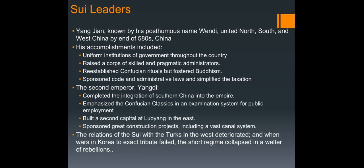Yangdi also worked on the vast canal and built a second capital at Luoyang — the same capitals used by the Han. Relations with the Turks collapsed, and as a result Yangdi was murdered by a member of his entourage in 618. His successor Gongdi ruled less than a year, and by that point the dynasty went downhill.